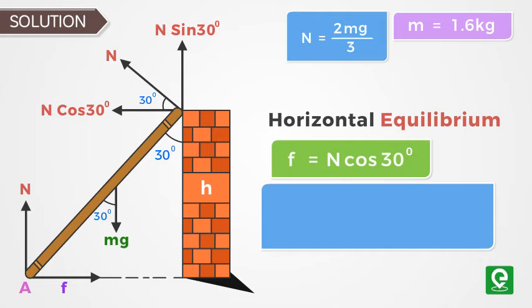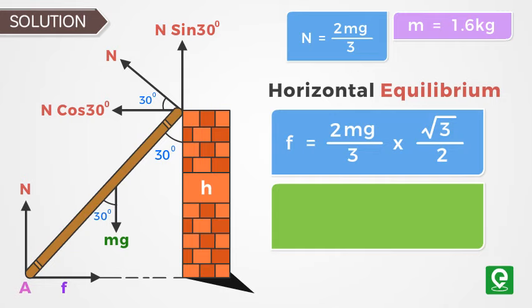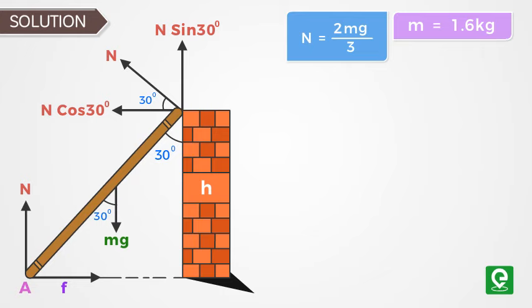By horizontal equilibrium, frictional force equals N cos 30 degrees. This implies frictional force equals 2mg by 3 into root 3 by 2. On substituting the value of mass and gravity, we get frictional force equal to 16 root 3 by 3 newton. Since the rod is in equilibrium, therefore net torque about A is zero.